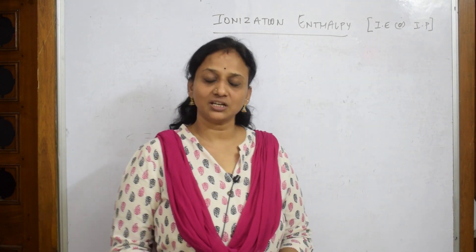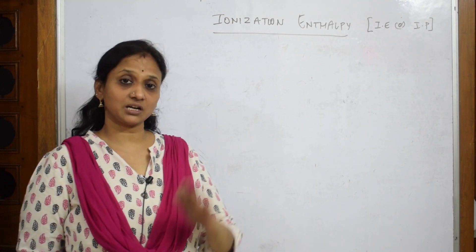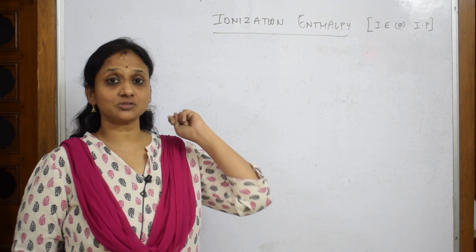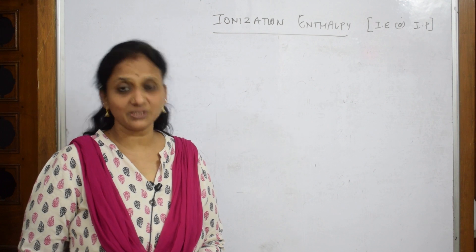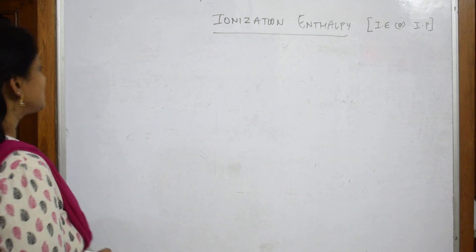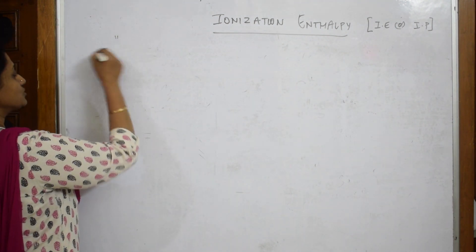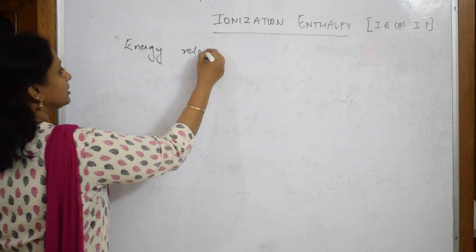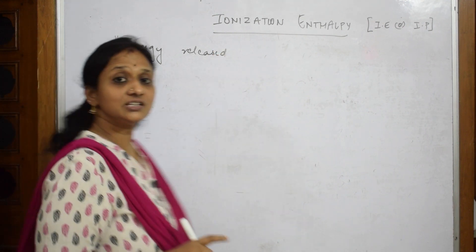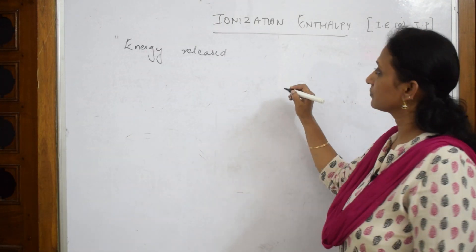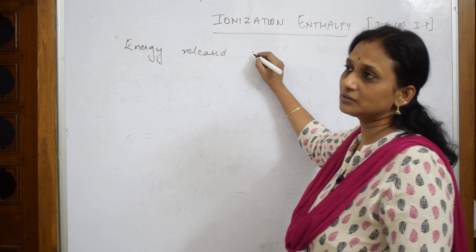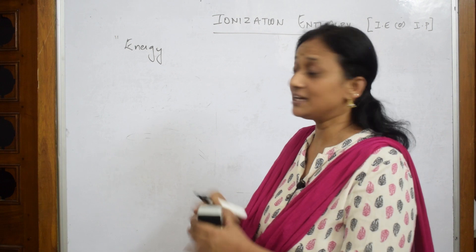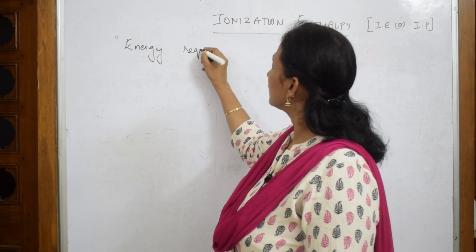Ionization enthalpy is also denoted as I.E. or ionization potential. I have done a series called Inorganic Series 2, where I discussed all the trends — first watch that video and come back. Now, what is ionization enthalpy? It is the energy required to remove an electron.